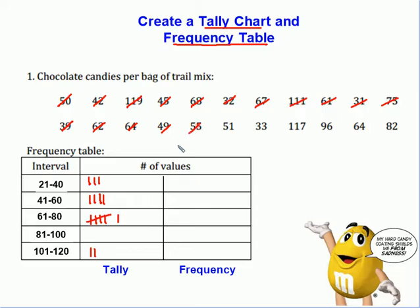49, 55, hey, that's two of them in a row right there. 51, and another one. 33, that's going to go right down here with these guys. 117, all the way down at the bottom again. 96, right there. 64, one last one right there. And then 82 is going to go right here. So now we have our tallies.